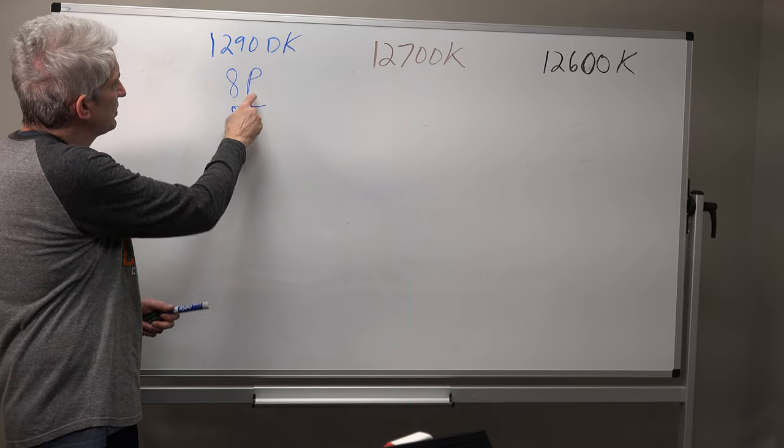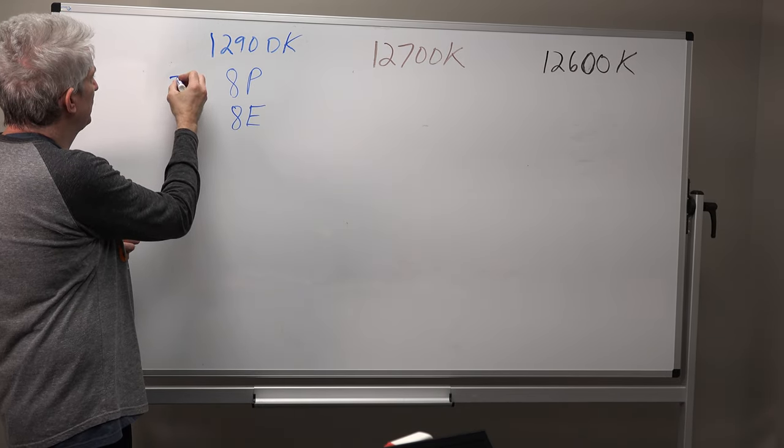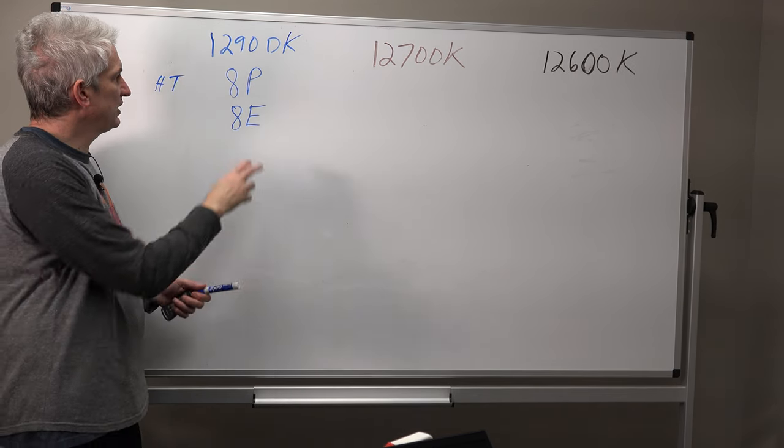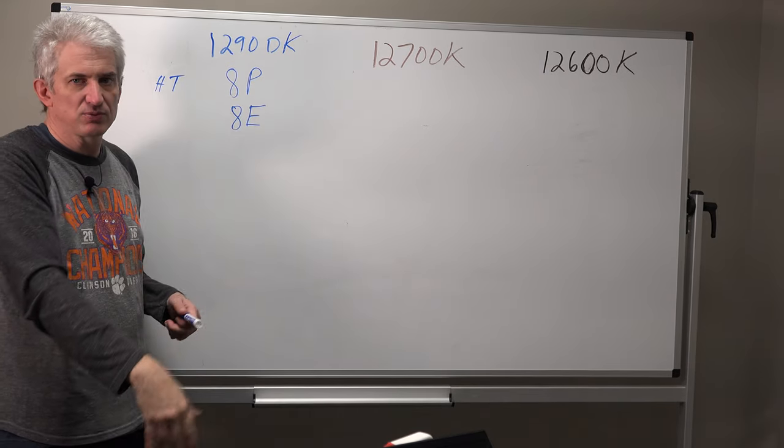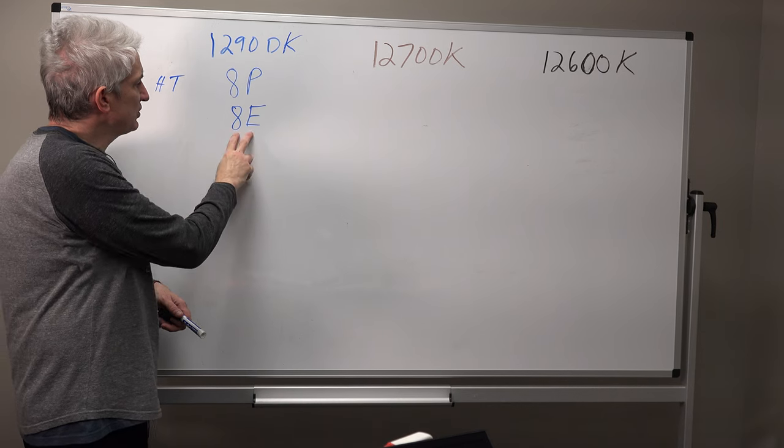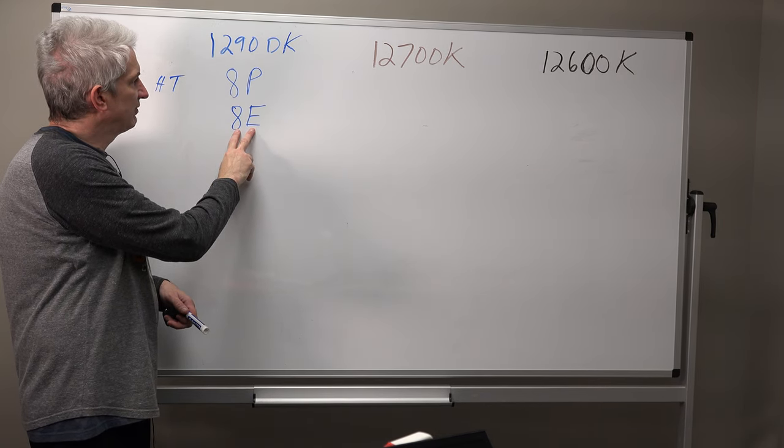Now, these P cores also get hyper threading. So I'm gonna put HT out here for hyper threading. So meaning you get two threads for each core. If you don't know what hyper threading is, just Google it. I'm not going to get into that right now. And the efficiency cores do not have hyper threading.